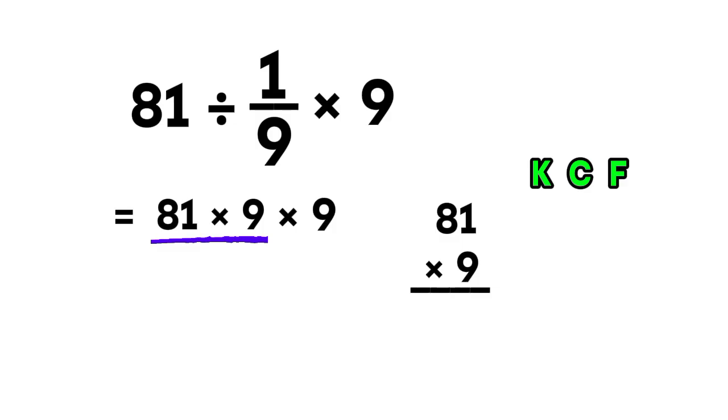Now 81 times 9. 9 times 1 is 9, 9 times 8 is 72. So we write 7, 2, 9.